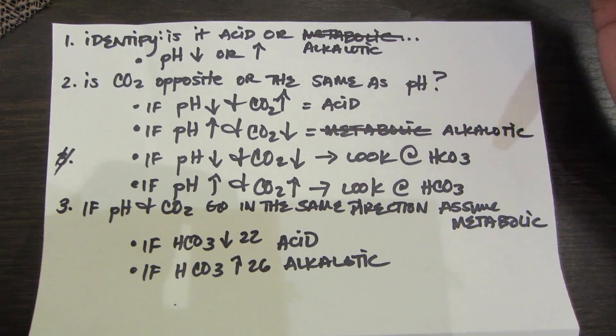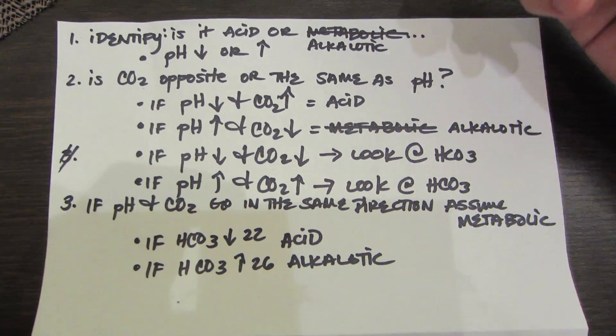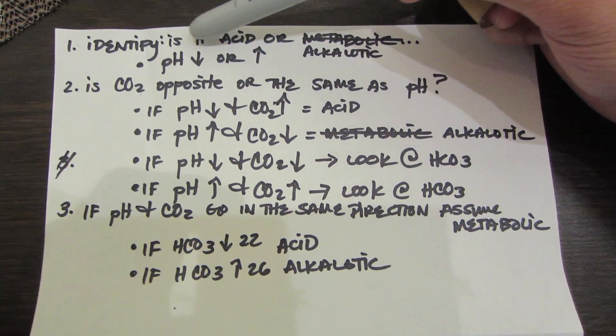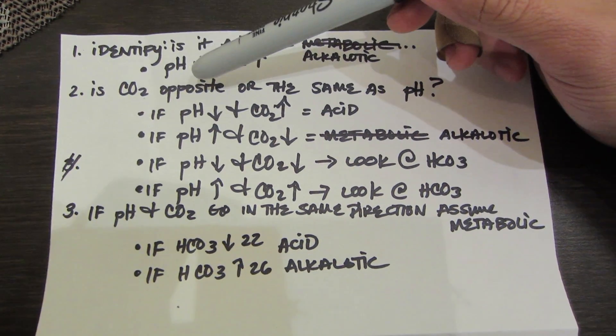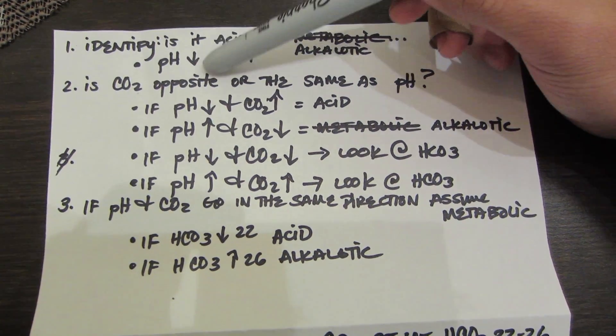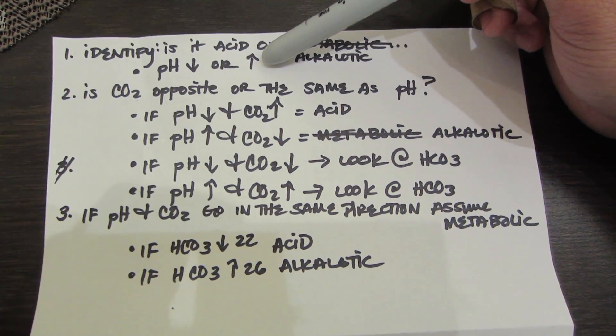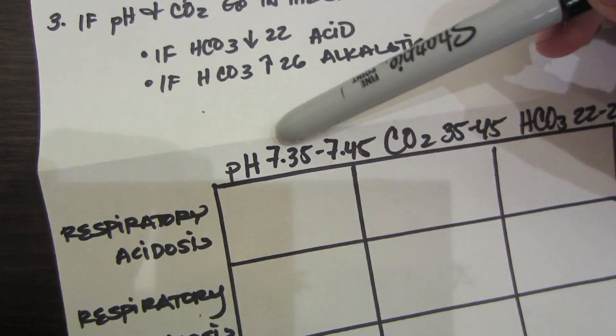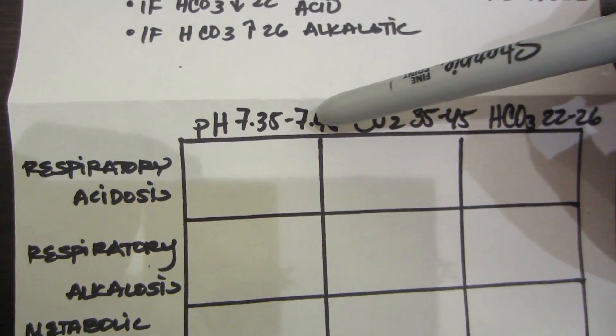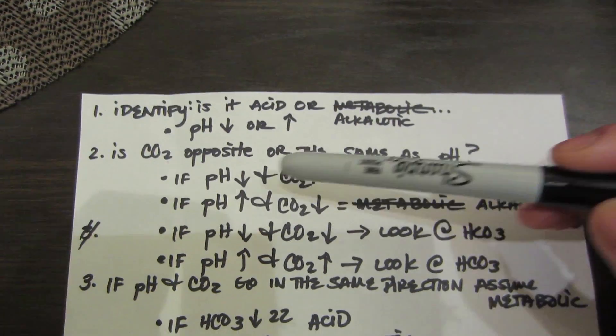First things first, you want to identify if it is acid or alkalotic. What does that mean? You will always take a look at the pH first. Is it below the normal or is it above? For pH, you want to remember 7.35 to 7.45.